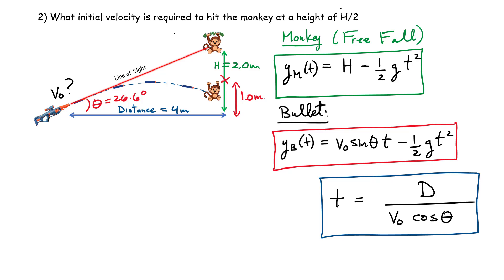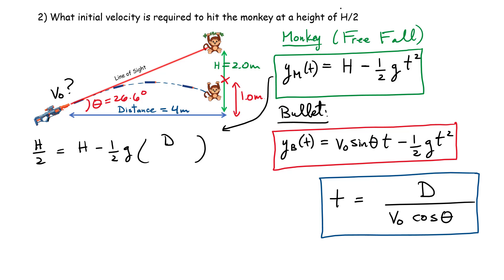Question two: what initial velocity is required if I want to hit the monkey when it's at H/2? With H = 2 meters, I want to hit it at 1 meter above the ground. I set the monkey's y-position equal to H/2: H/2 = H − ½g t². I substitute the expression for time t = D / (v₀ cos θ) and square it. The unknown to solve for is v₀, which requires a bit of algebra.